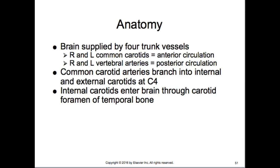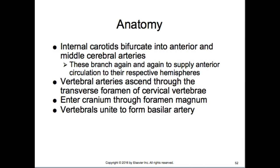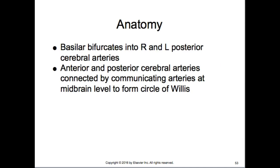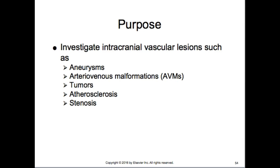The common carotid arteries branch into the internal and external carotid around C4. Internal carotids enter the brain through the carotid foramen of the temporal bone and bifurcate into the anterior and middle cerebral arteries, supplying anterior circulation to respective hemispheres. The vertebral arteries ascend through the transverse foramina of the cervical vertebrae, enter through the foramen magnum, and unite to form the basilar artery, which bifurcates into the right and left posterior cerebral arteries. These connect via communicating arteries at the Circle of Willis.